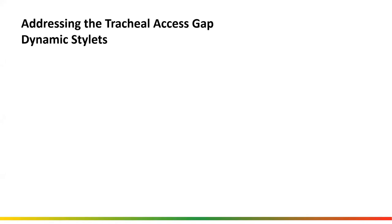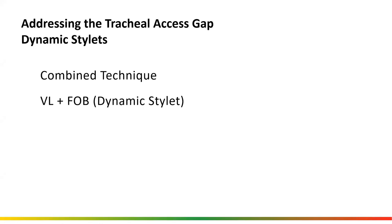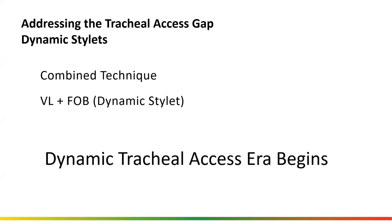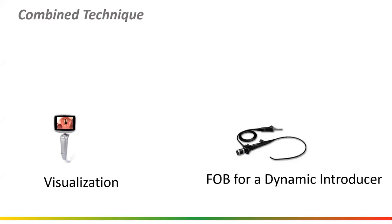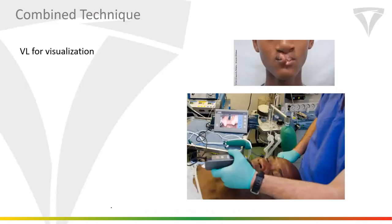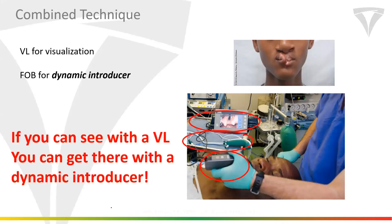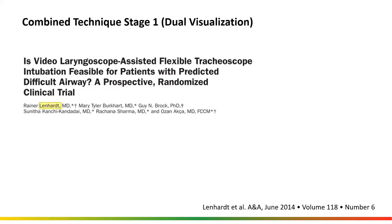How do we address the tracheal access gap? Clearly it's dynamic stylets — that's what the literature says. Combined techniques: VL plus fiber optic bronch is our current state, but really any dynamic stylet is a combined technique. This is the evidence that the dynamic tracheal access era has begun. Back to our model: left-hand visualization, right-hand fiber optic bronchoscope as a dynamic introducer, and then the operator.